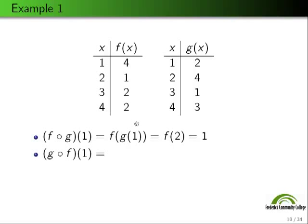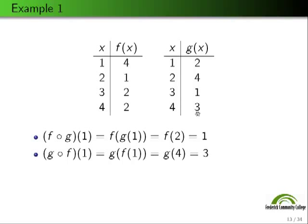Now let's look at g∘f(1). Notice we've switched the order. Now we're plugging f(1) into g. f sends 1 to 4, so g∘f(1) = g(4), and g sends 4 to 3. So g∘f(1) = 3. We immediately know something about composition: it is not commutative. That is, f∘g(1) ≠ g∘f(1).